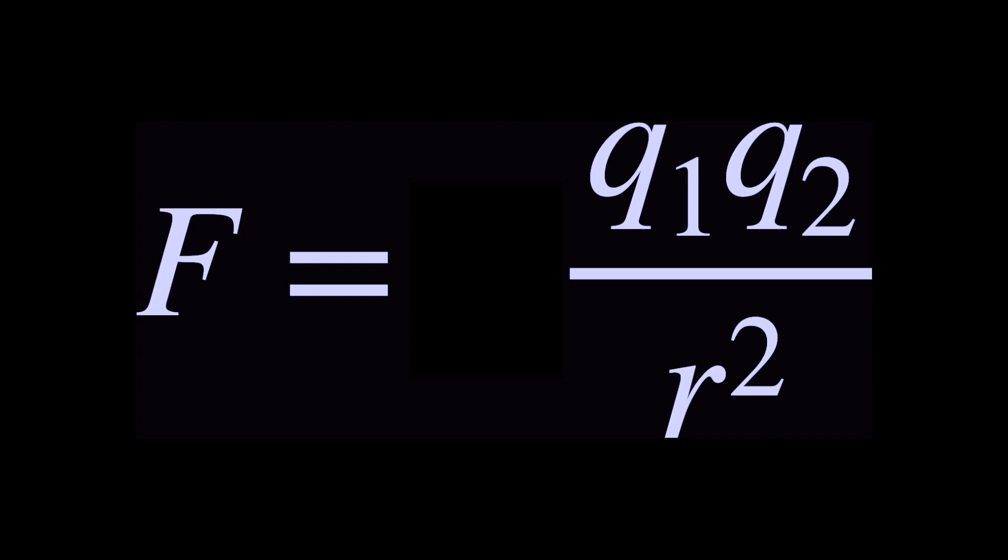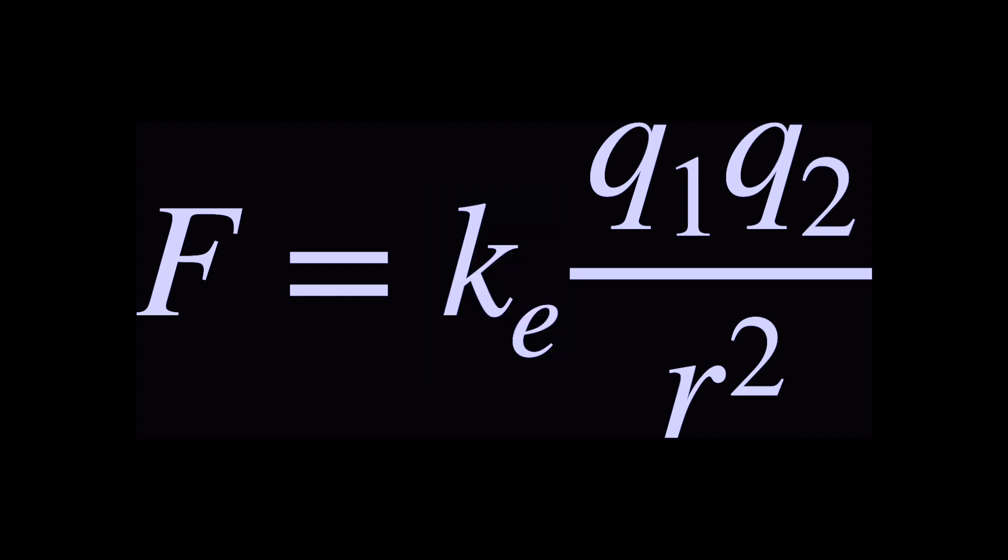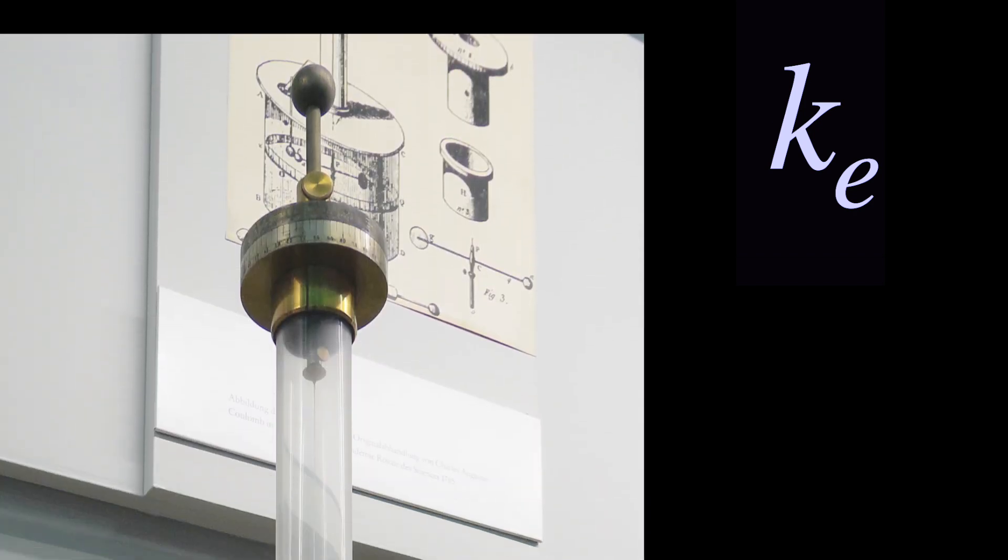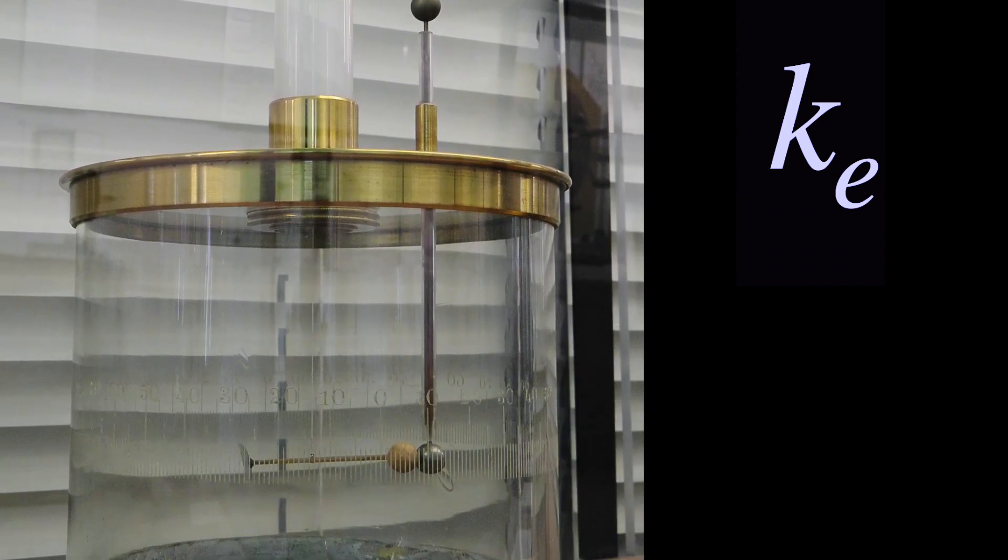To make the two sides of this equation equal, Coulomb had to introduce a term called the electric constant. It's a number that never changes. It relates to one of the fundamental constants of our universe. Amazingly, he could even estimate this number using his torsion balance.